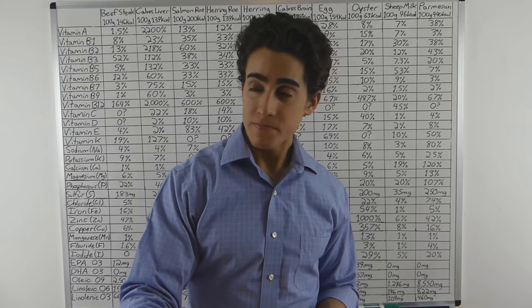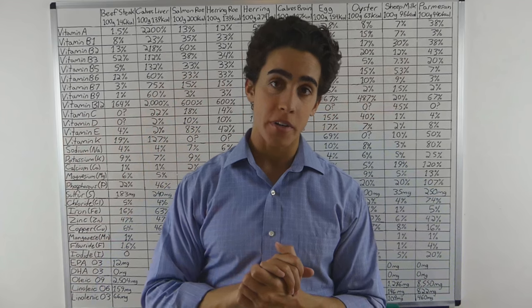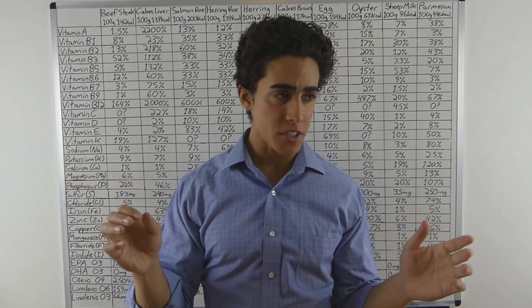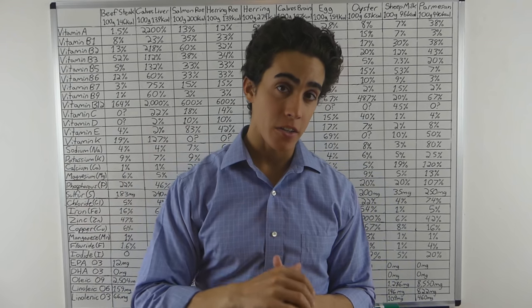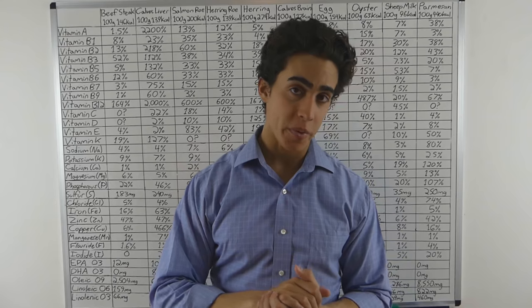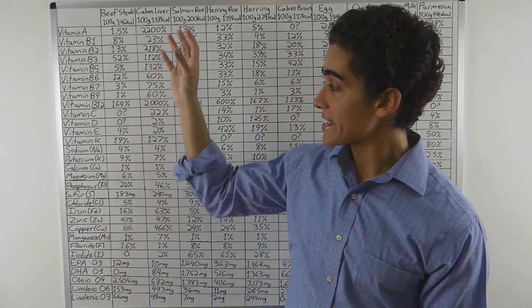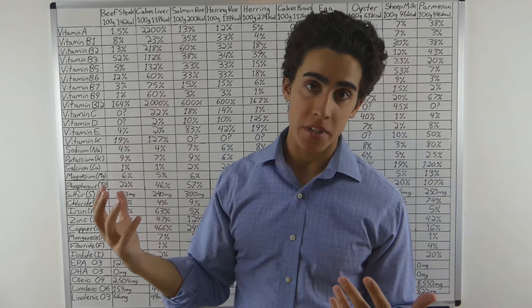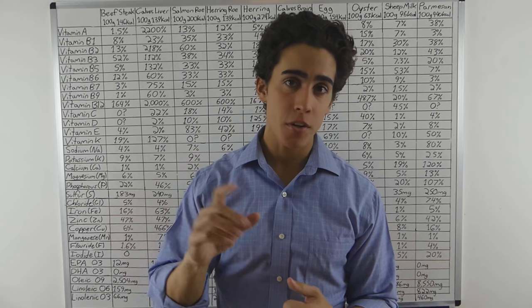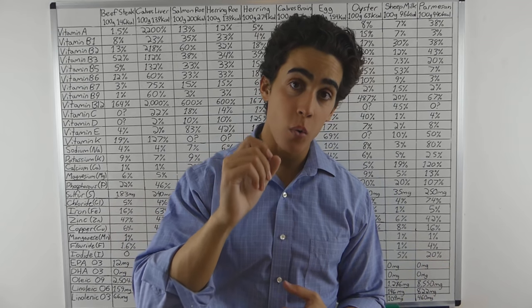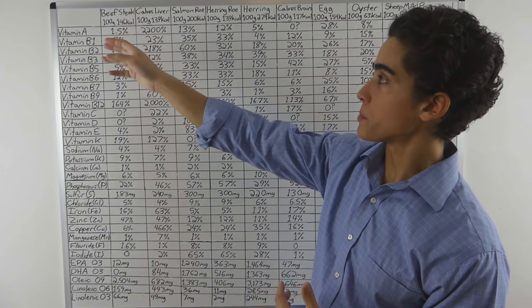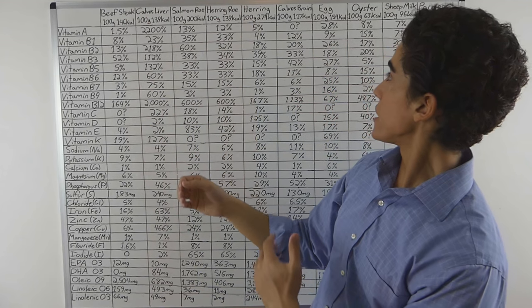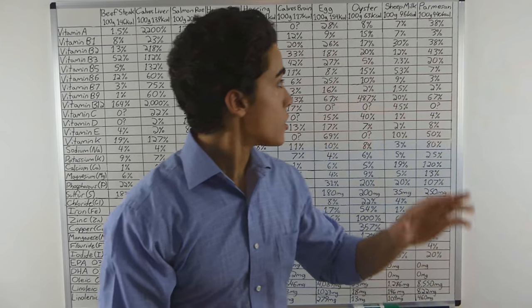So I took some data from a German nutrient database - forgive my pronunciation - nahrwertrechner.de. I'll put that in the description. Two reasons for using a German database: one, they test for all the vitamins unlike the USDA. Two, German food is always higher quality, or at least for the most part - pastured meat, wild-caught fish, farm eggs, grass-fed milks and cheeses.